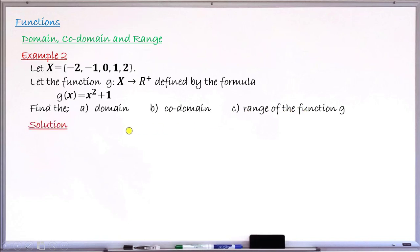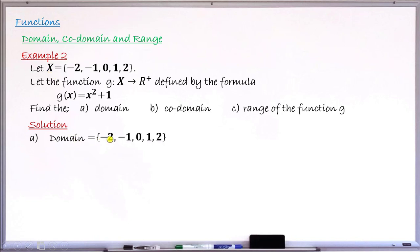Solution: starting with the domain. Remember, domain is always your very first set. This function g takes each and every element from the first set X and assigns it to a single element in the second set R⁺, the set of positive real numbers. We have set X already — these are the members inside this very first set, which is our domain. So the domain contains the elements: minus 2, minus 1, 0, 1, and 2.